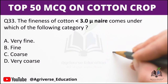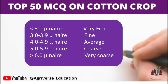Next question: The fineness of cotton — if it is below 3.0 micronaire, it comes under which category: very fine, fine, coarse, or very coarse? If the fineness of cotton is below 3 micronaire, it comes under the very fine category.